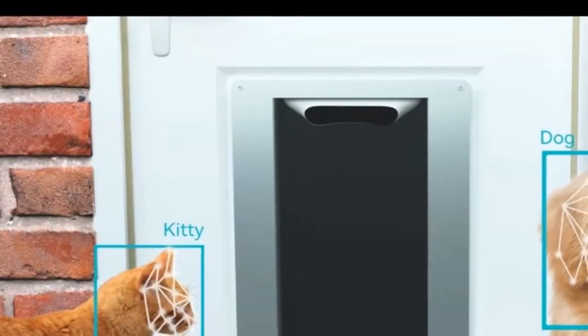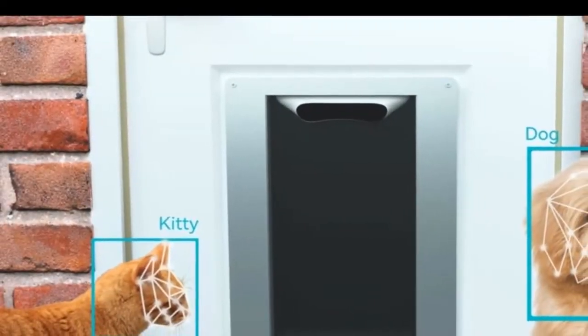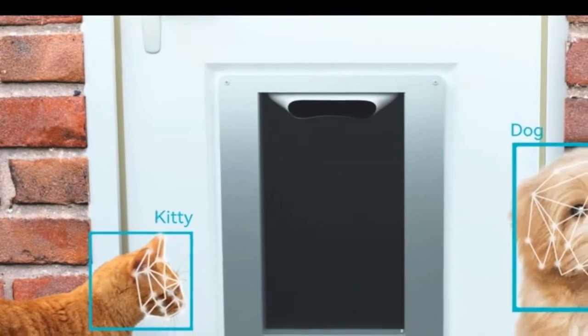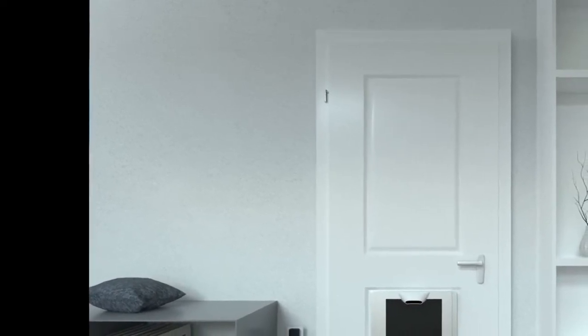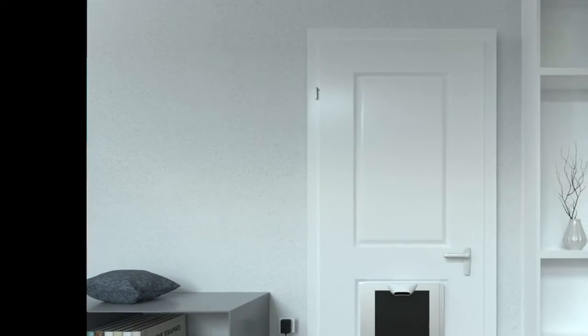Smart pet door uses facial recognition to keep critters out. Installing a pet door can make pet ownership less of a chore by eliminating the need to constantly let them outside for bathroom breaks and then back in again. The Petvation wants to make sure it's only your dog or cat coming back in.